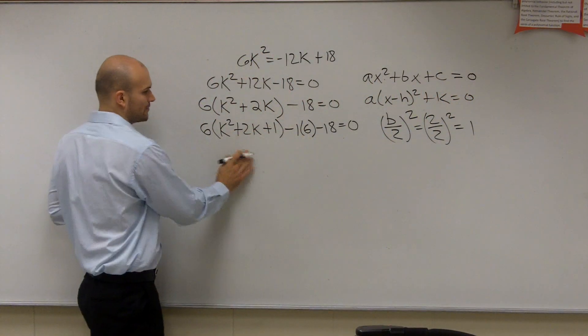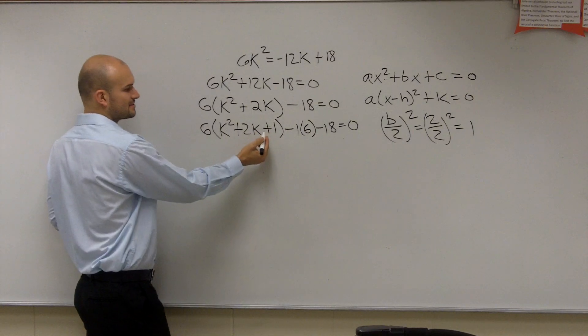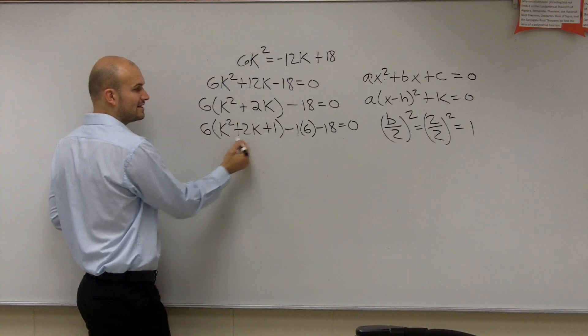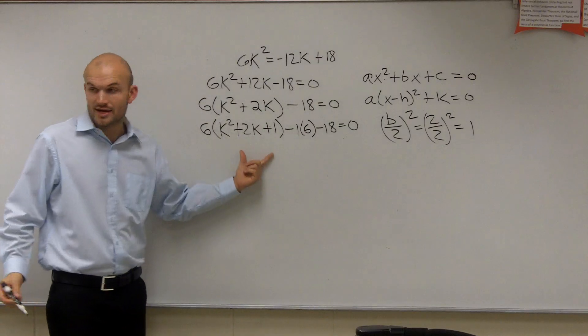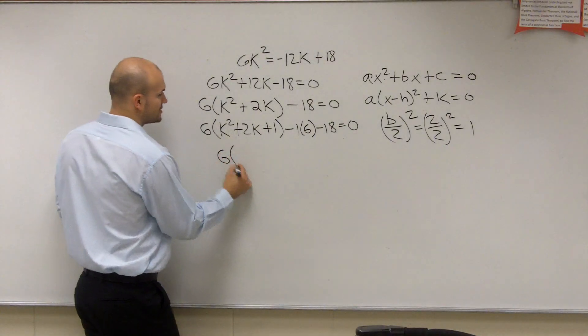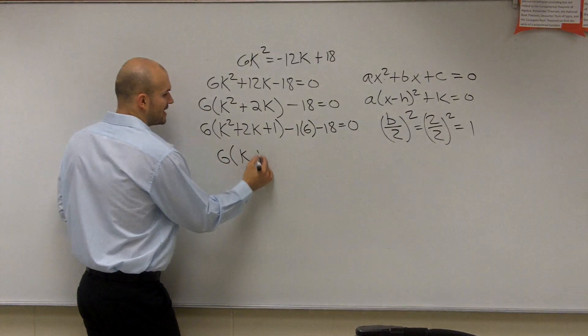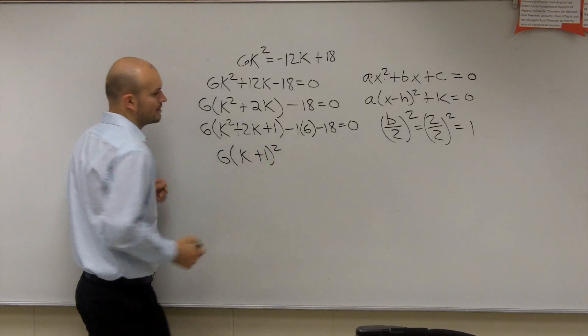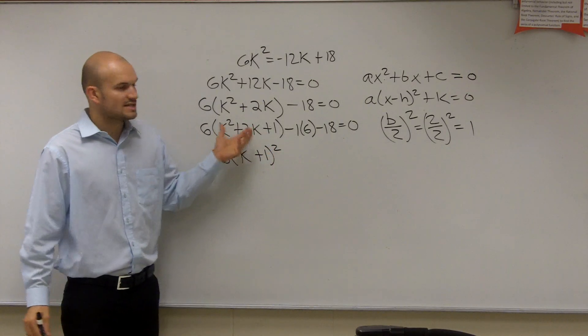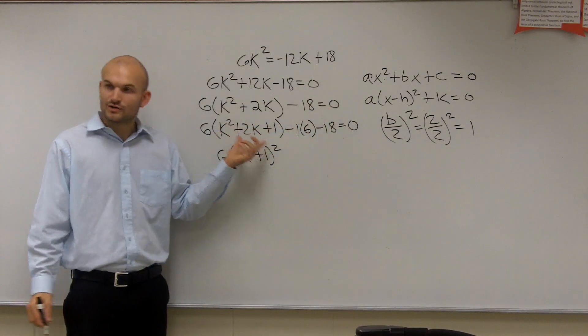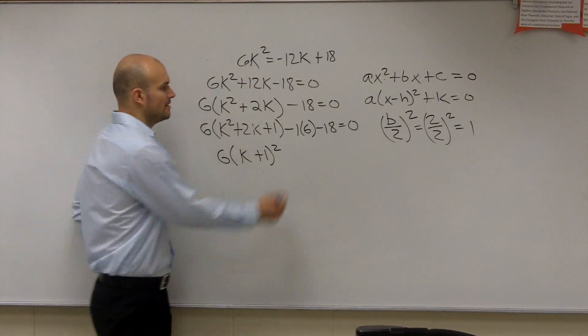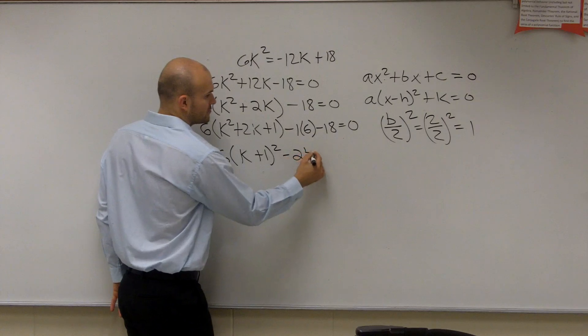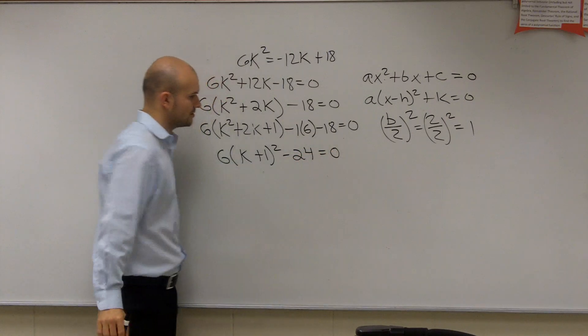So now what I'll be working through with this is now I can rewrite this. Now since I've created this to be a perfect square trinomial, when you guys factor this, what you'll notice is you'll get 6 times k plus 1 squared. Because that's what that b divided by 2 creates. It creates a perfect square trinomial, which is a binomial squared. Then I can simplify this, which is a negative 24 equals 0.